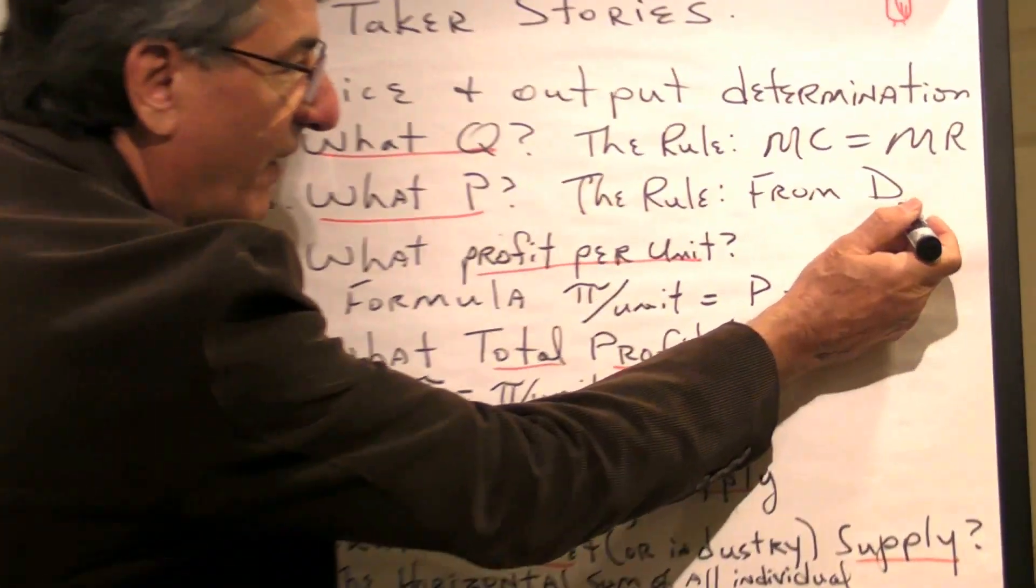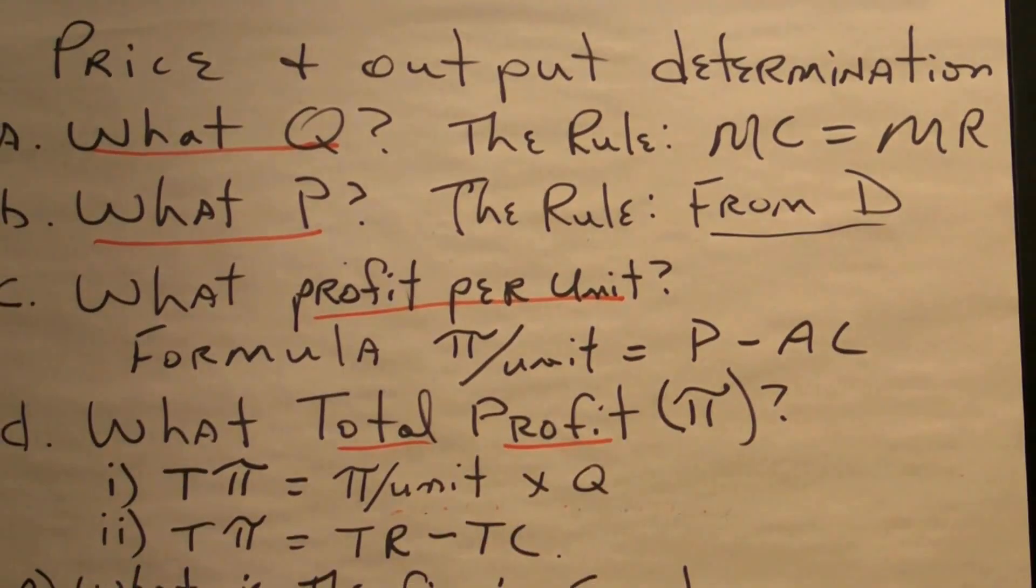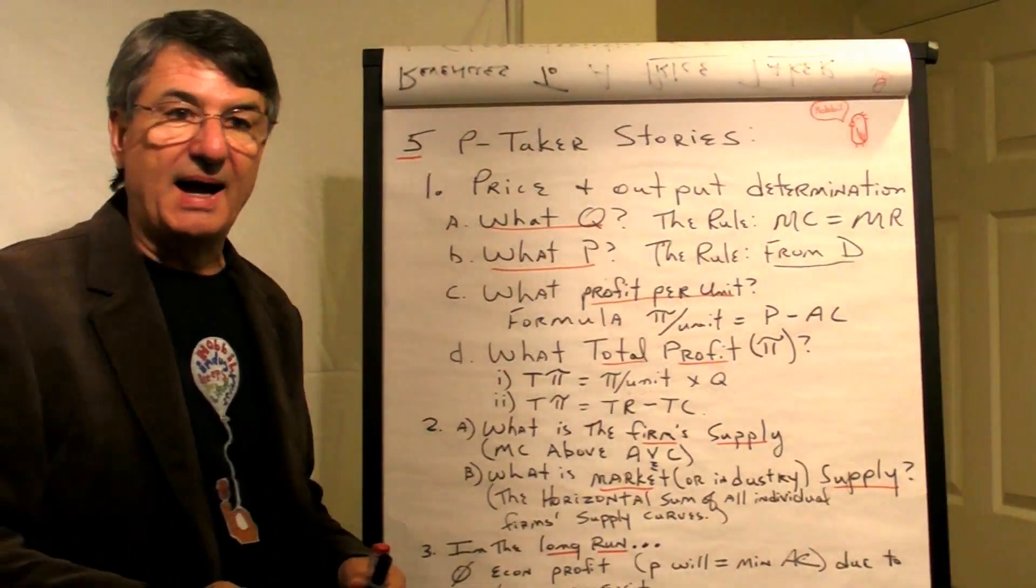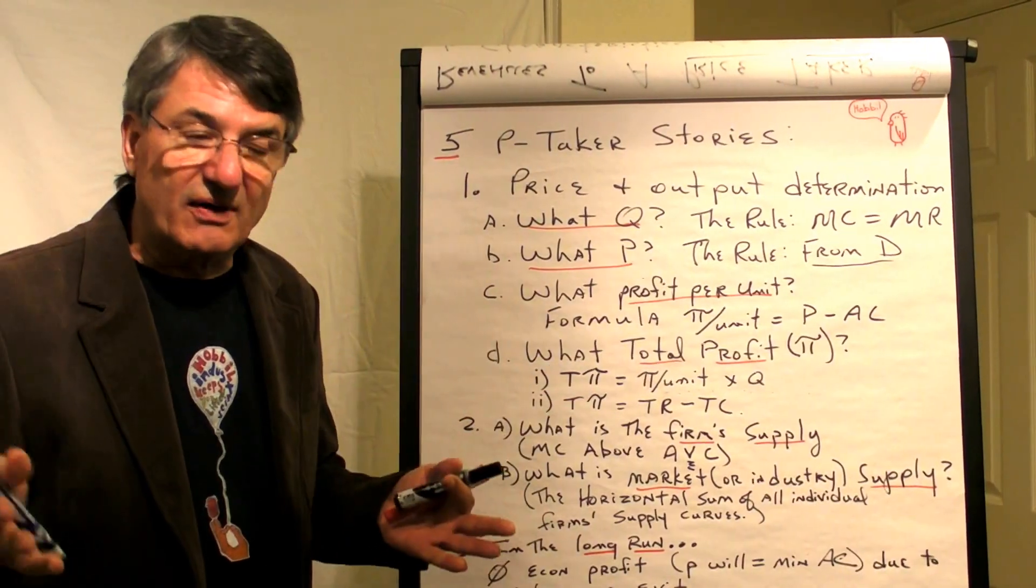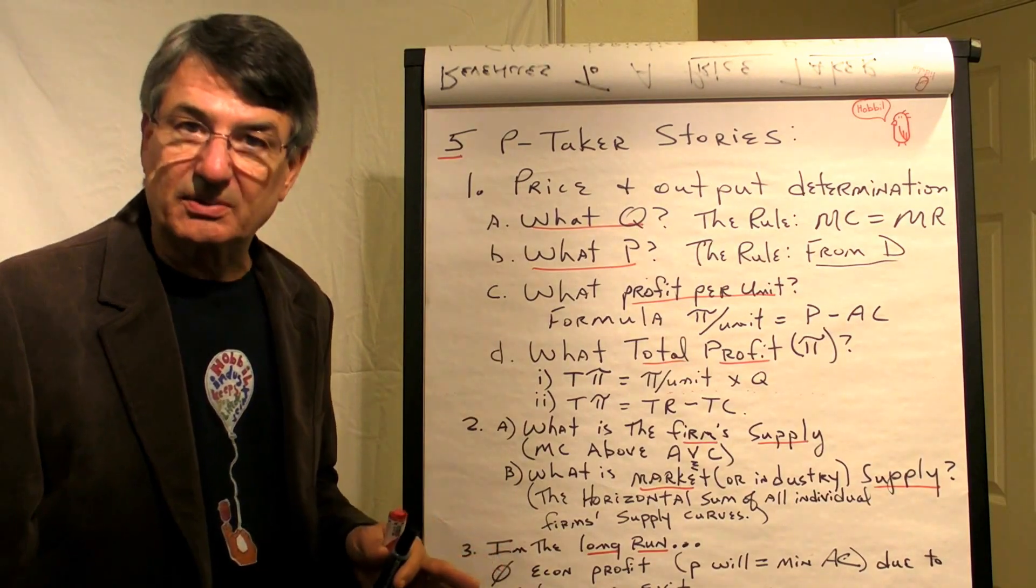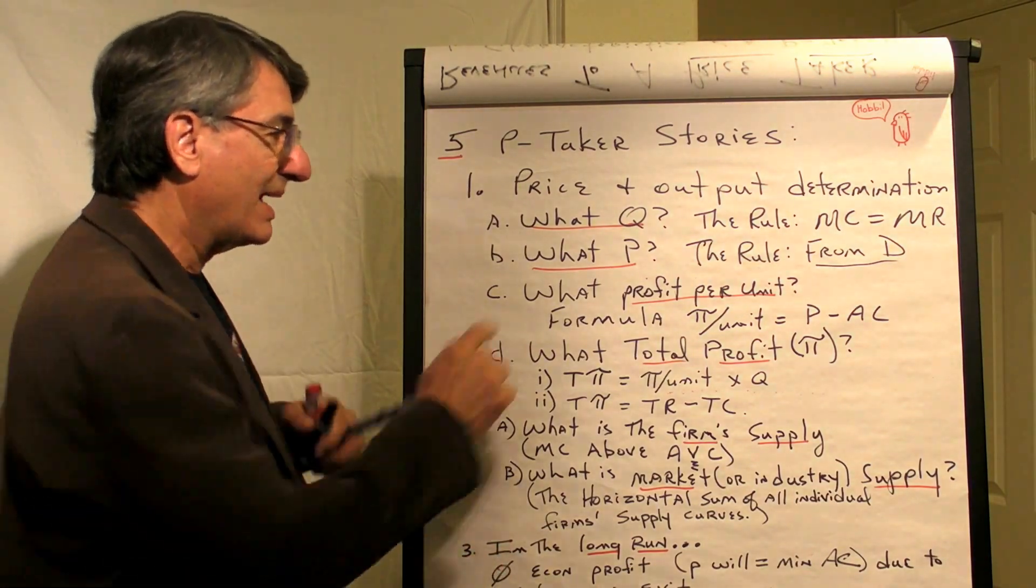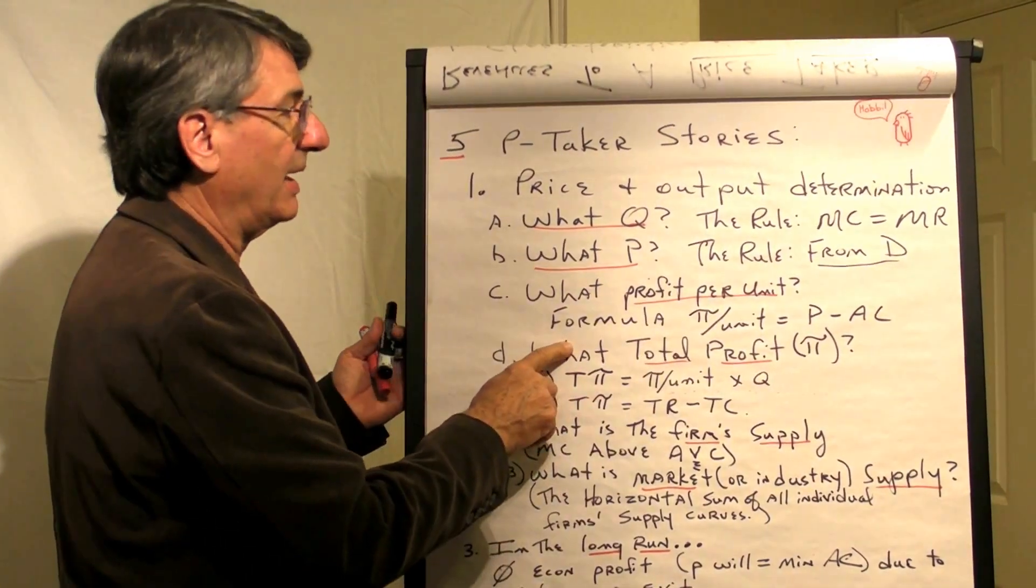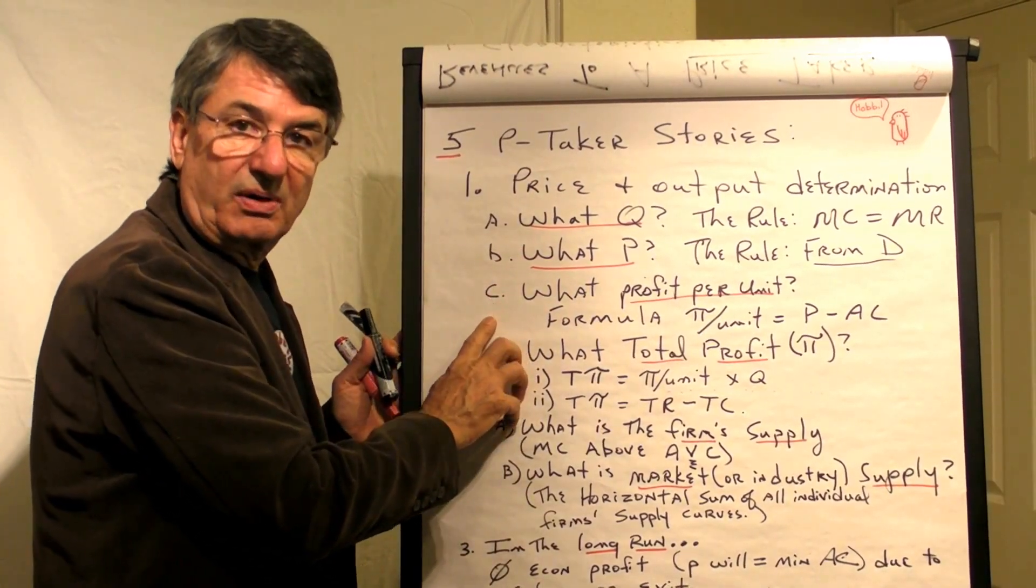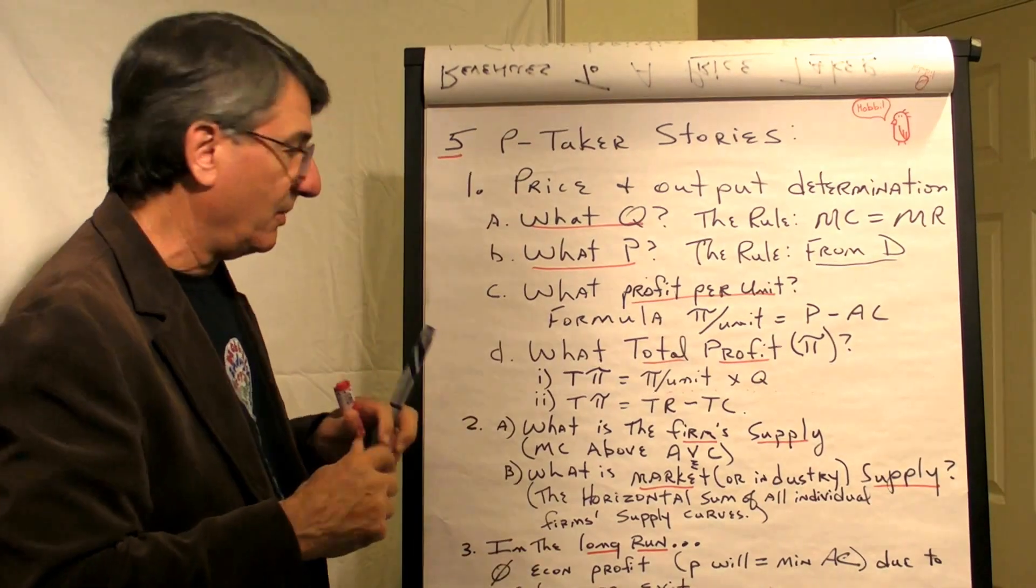What price? The rule is from the demand curve. Demand always sets the price. The price of a Prius is determined by demand. The price of a house in Irvine versus Bolivia is determined by demand. So price always comes from the demand, and in the price taker instance, the price is determined by the market.